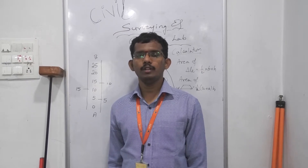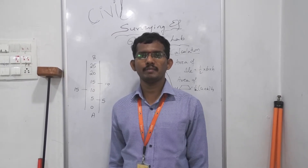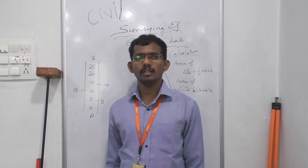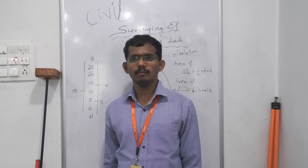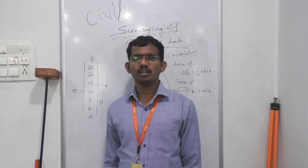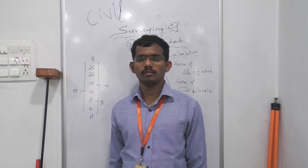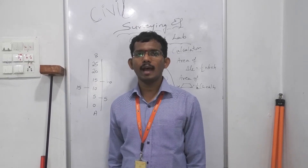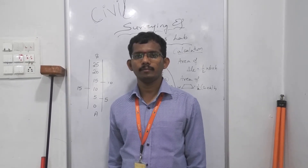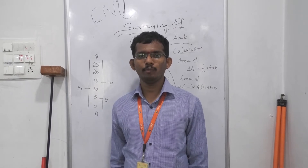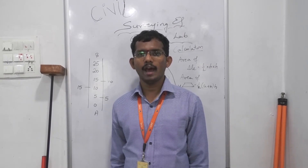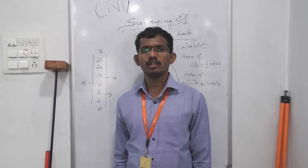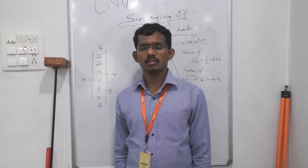In our surveying lab, we use chains belonging to metric chains — we call them standard chains. They may be 20m or 30m in length. To measure an area using closed traverses with chain surveying, we require a few apparatus: metric chain, ranging rod of height 4m, cross-staff, and pegs.